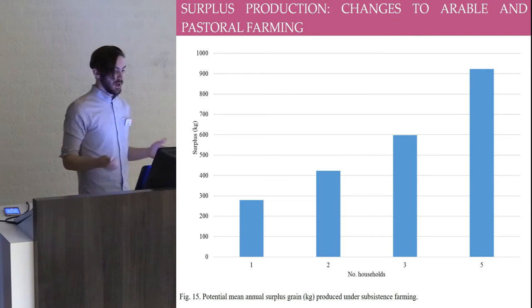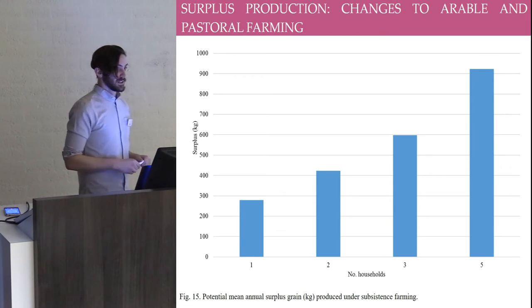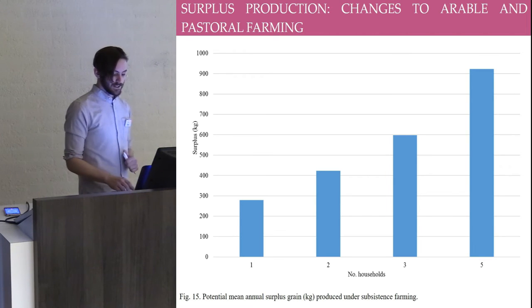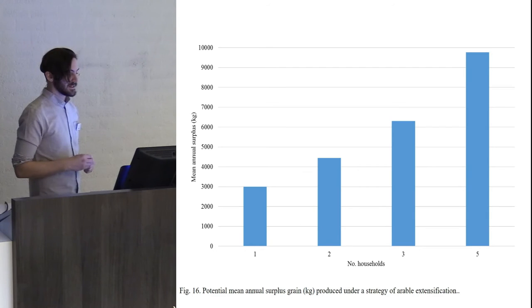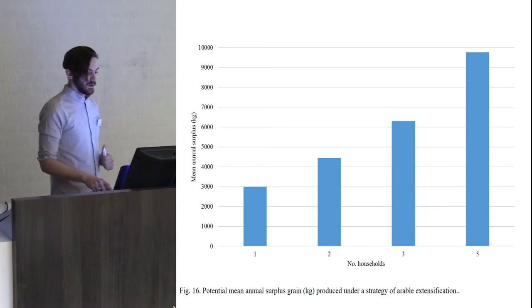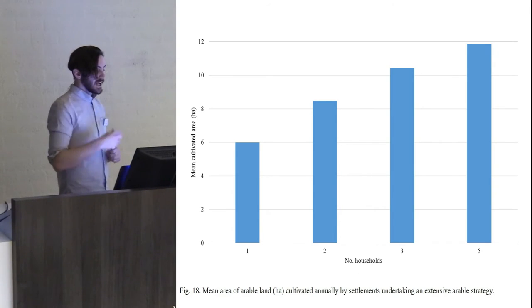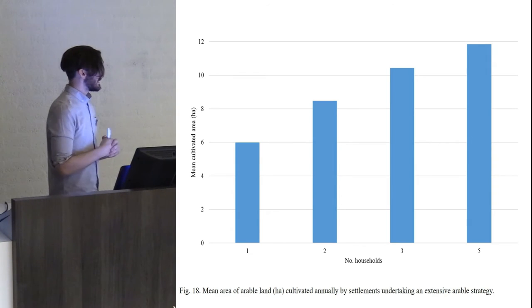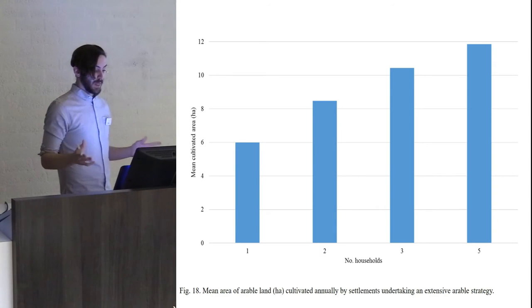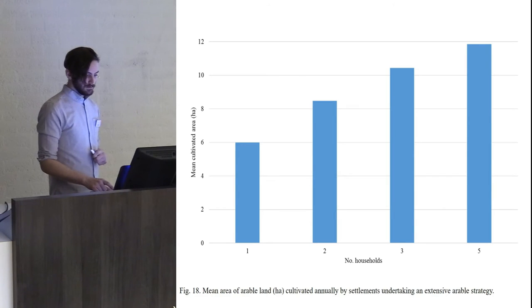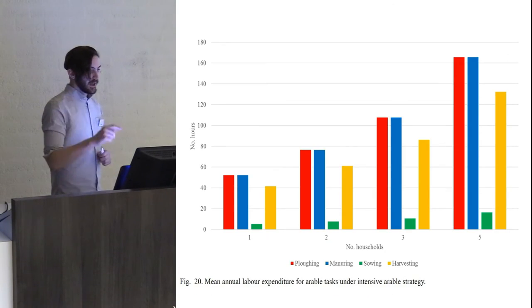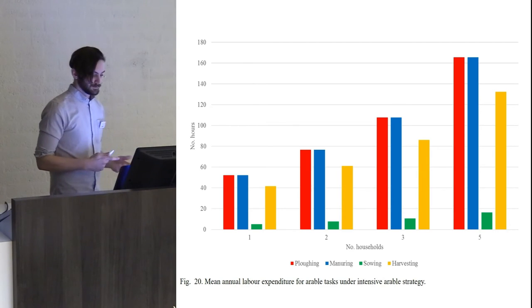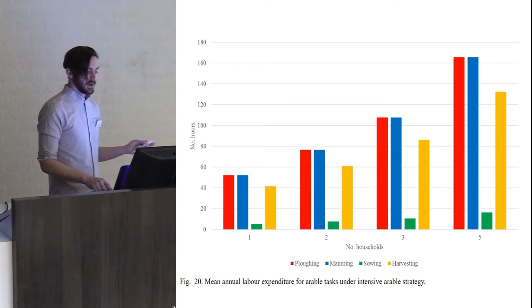So what happens when they change from subsistence production to surplus production? Under subsistence strategy, surplus grain can be produced because of the buffer but it cannot be guaranteed. However, under an extensifying process, surplus grain can be guaranteed and the amount of surplus is significantly higher. However, this comes at a cost. They need substantially larger areas of land and the land cultivated here corresponds to the upper limit that their settlement can cultivate according to the amount of labour they have. And if they undertake a strategy of intensification, they must undertake a new task - manuring - which also will increase the total labour expenditure.